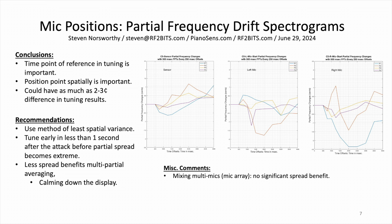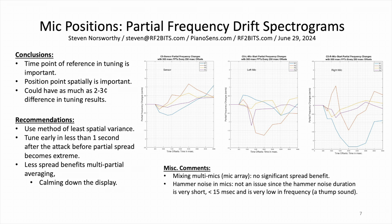I tried mixing multiple microphones — a microphone array up to seven microphones — and I didn't see any appreciable spread narrowing. I just saw different-looking pictures every time I averaged multiple mics together, so I don't believe there is a significant statistical difference from multi-mic averaging. Regarding hammer noise affecting tuning in the first time block: I muted all three strings, played the hammer noise, recorded it, and did spectral analysis. It's a low-frequency thump lasting maybe 10 to 15 milliseconds — it really isn't an issue. Thank you for watching. My email address is on the first slide, and I'm happy to take your questions.